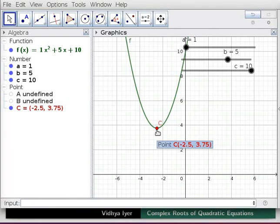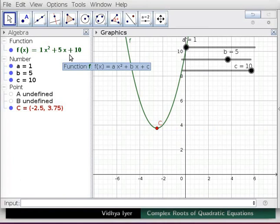Points a and b are undefined as the function does not intersect the x-axis. Extremum point c is shown in red in algebra and graphics views.